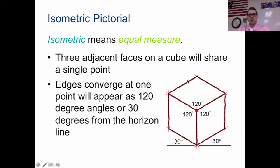What I want you to do is be taking notes during this time. You should have written down isometric means equal measures. And then go and sketch this out in your notebook. This little sketch right here that says 120, 120, 120, and then 30 and 30 down here.